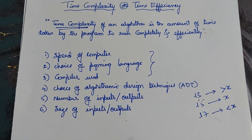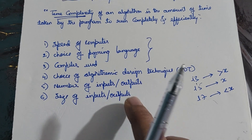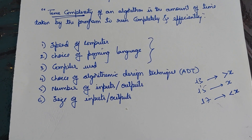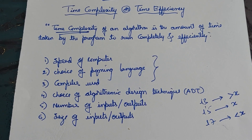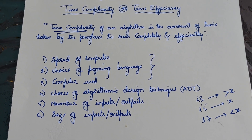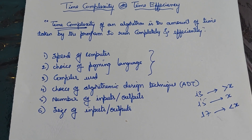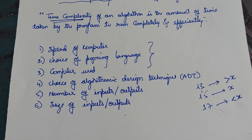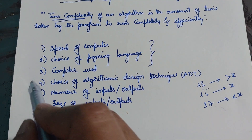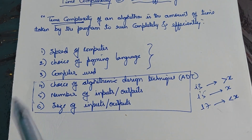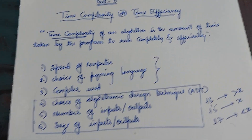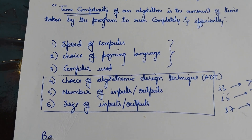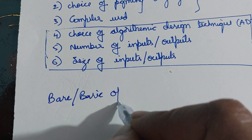So on all six factors, as I said, we don't have any control over the first three — whatever processor, programming language, and compiler is available, we use those. But we do have control over the last three: what type of technique to use for a given problem, and how to optimally provide inputs. Now, whenever we are finding the time complexity of any algorithm, we need to find out one main operation called the base operation, also called the basic operation.